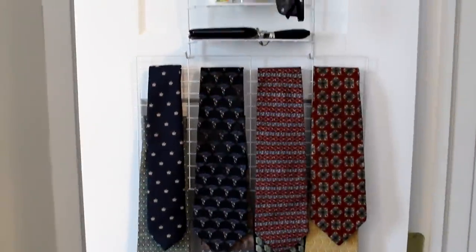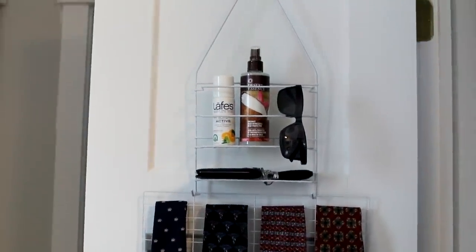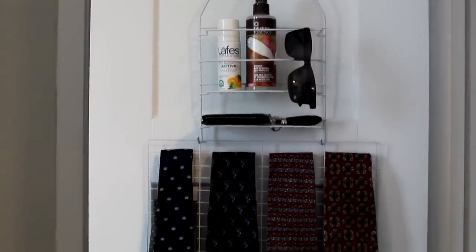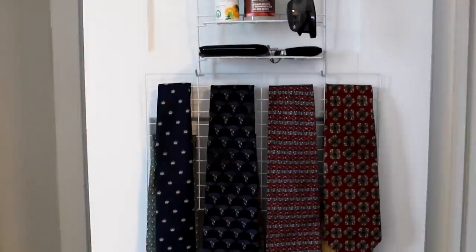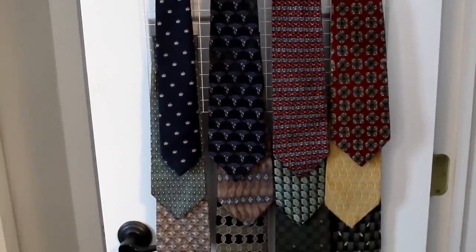Another great use for this caddy and wire rack combo would be as a tie organizer. The caddy portion can be used to store deodorant, body spray, sunglasses, wallet, and keys. And ties can be folded and hung on the slots to keep them tidy and organized and on display for easy selection.